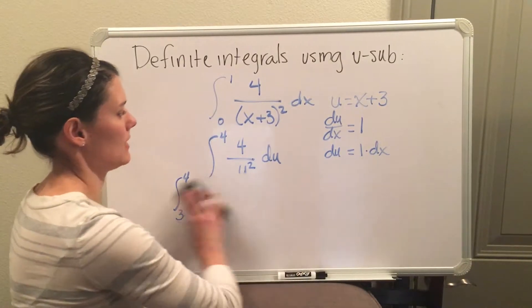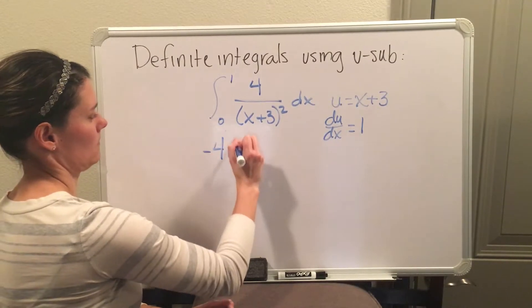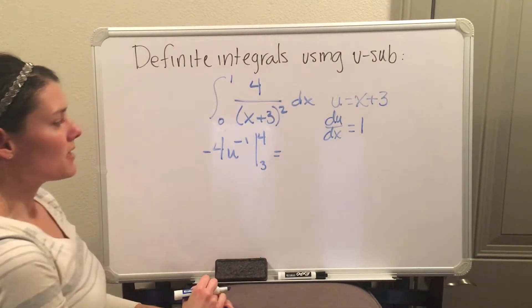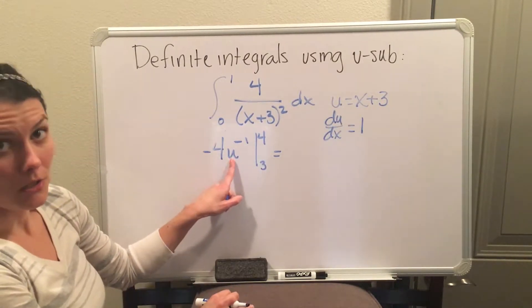And then I will put the vertical bar from 3 to 4, and now I'm going to apply the FTC. So let me erase some.